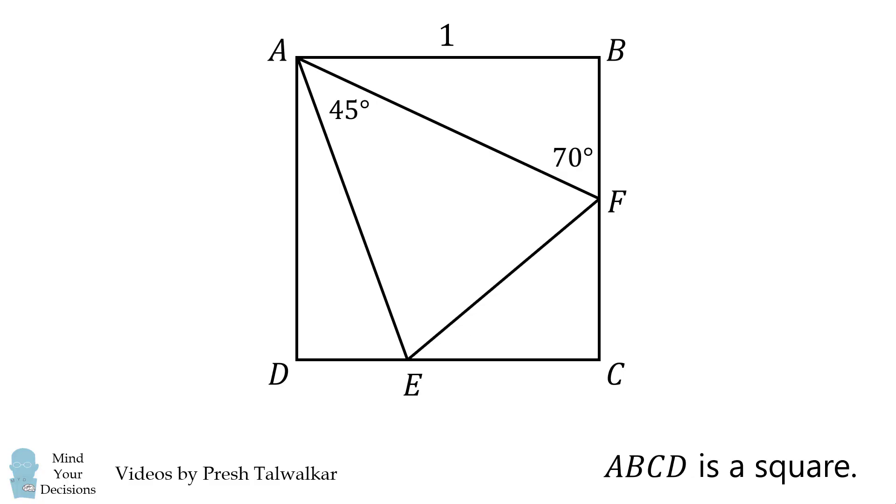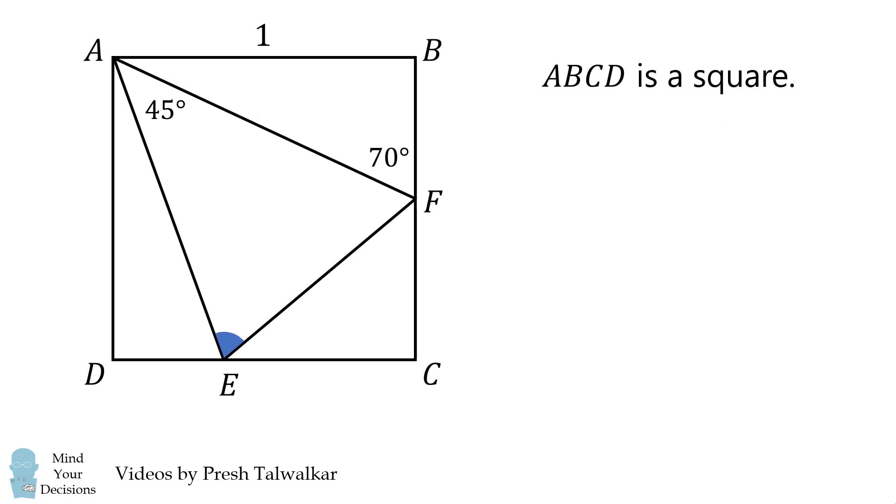The first part of the question is to solve for the measure of angle AEF. The second part of the question is to solve for the perimeter of triangle ECF, that is, solve for EC plus CF plus FE.